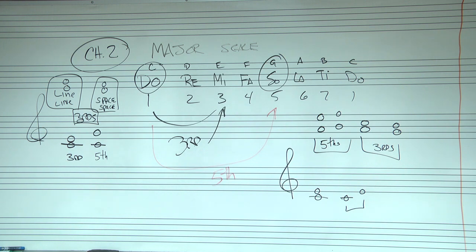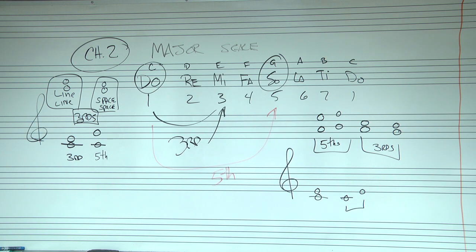If you have a note here, everybody sing this note: La. So there's one, here's two, three. When you harmonize, somebody sings this note — La — and somebody else sings a third above: La. A third above is going to be La. I'm singing a third above each note. So thirds and fifths — the scale is the basis for doing all the harmonies, all the melodies, and all the chords for music.